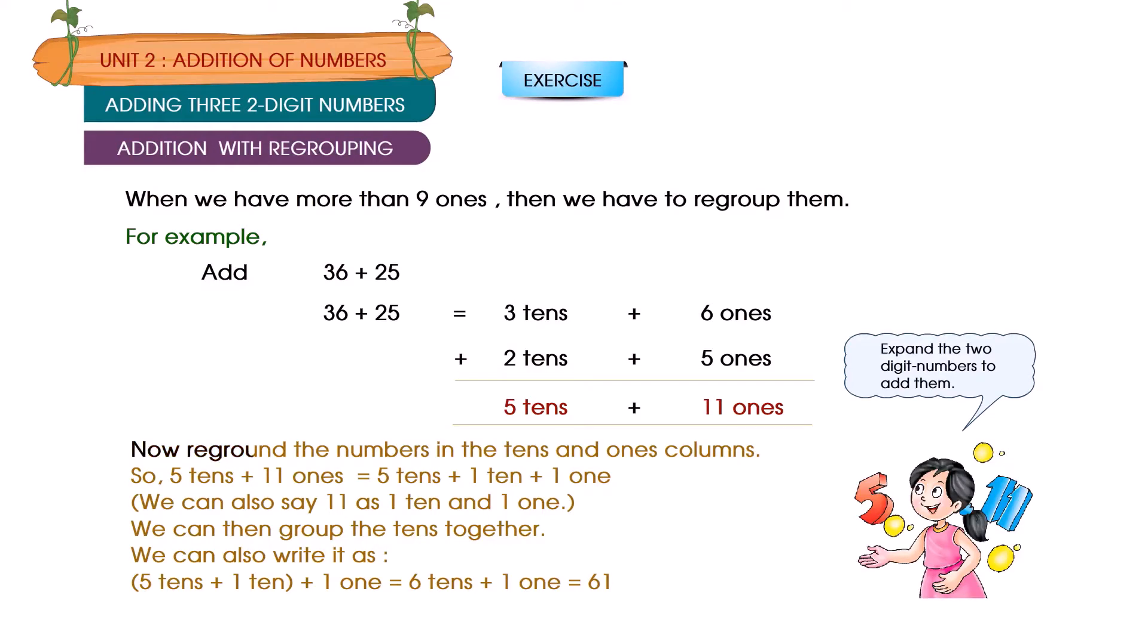Now, regroup the numbers in the tens and ones column. So, 5 tens plus 11 ones is equal to 5 tens plus 1 ten plus 1 one. We can also say 11 as 1 ten and 1 one.